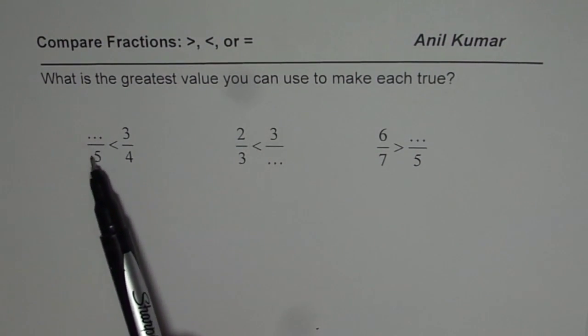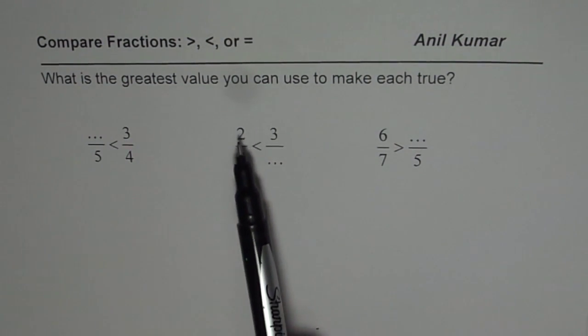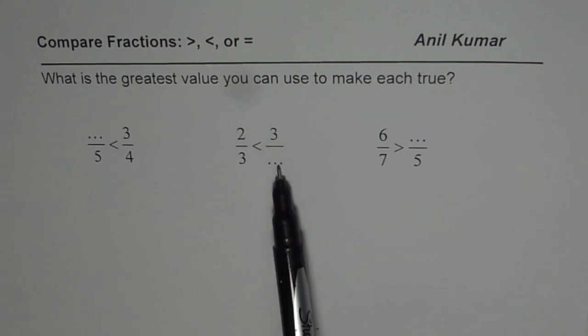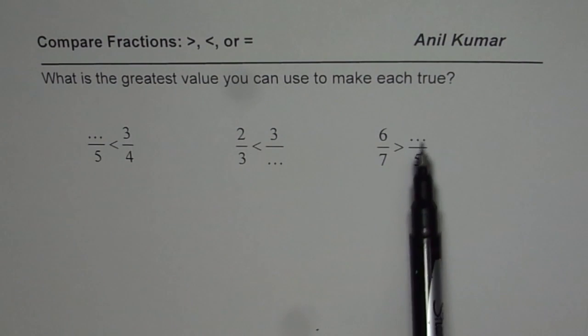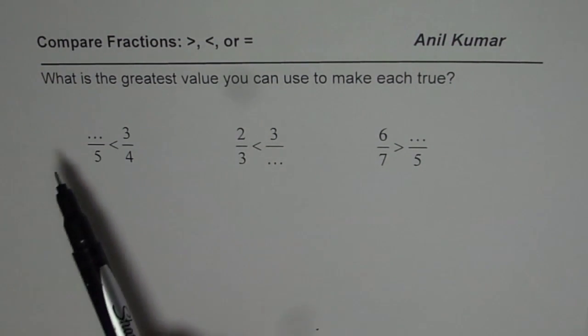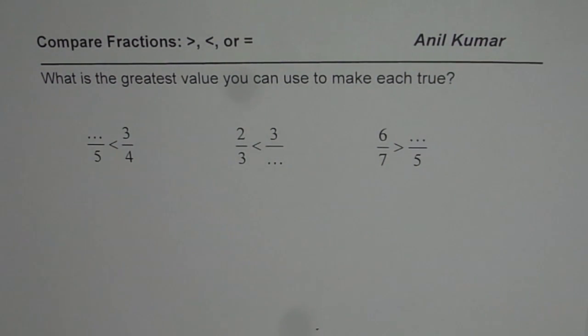So that is, something is less than 3 over 4. Here, 2 over 3 is less than 3 over something, and 6 over 7 is greater than something over 5. You need to find the values of these.